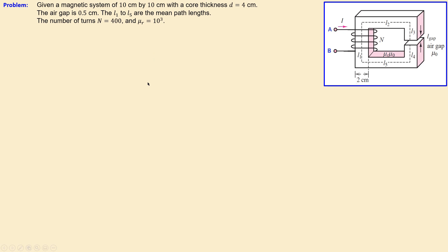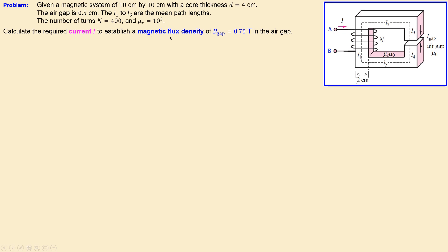The relative permeability of the core material is 1000. What we need to calculate is the required current to establish a magnetic flux density in the air gap of 0.75 tesla.